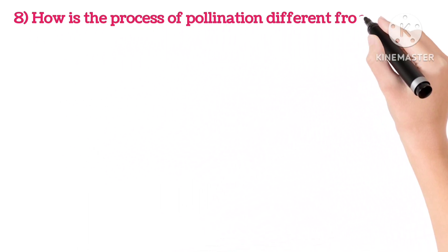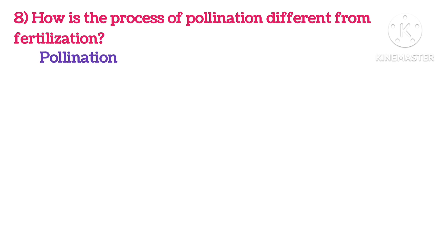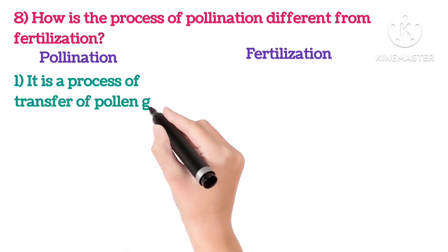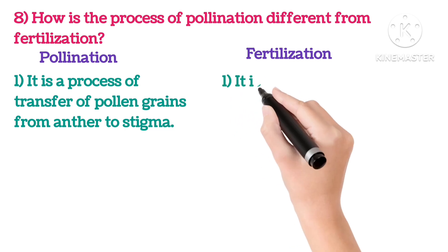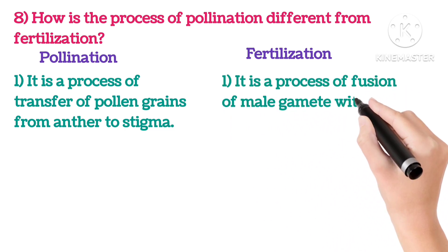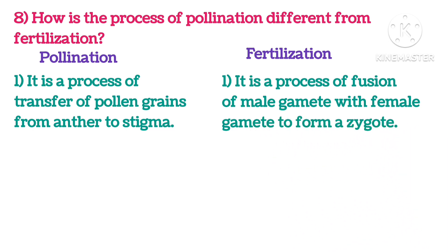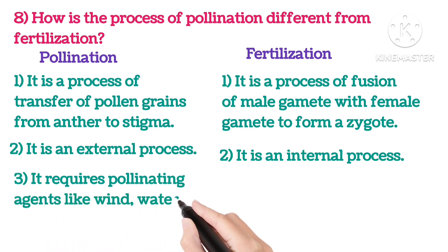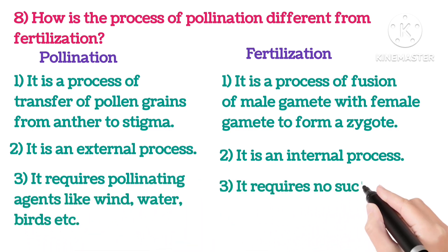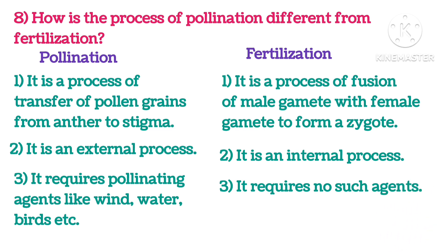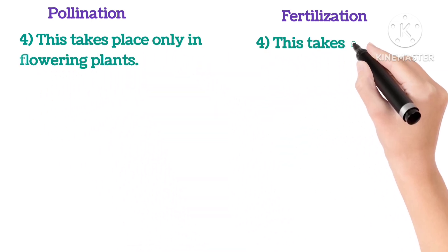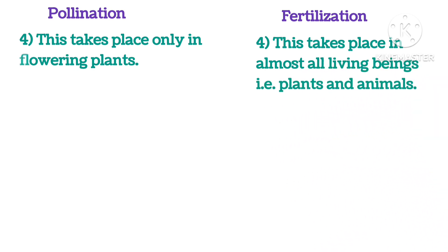Eighth: How is the process of pollination different from fertilization? Pollination is the transfer of pollen grains from the anther to the stigma, whereas fertilization is the fusion of the male gamete with the female gamete to form a zygote. Pollination is an external process; fertilization is an internal process. Pollination requires pollinating agents like wind, water, and birds; fertilization requires no such agents. Pollination takes place only in flowering plants, while fertilization takes place in almost all living beings — plants and animals.